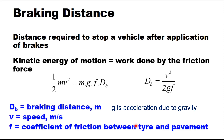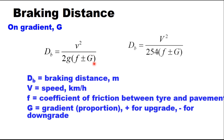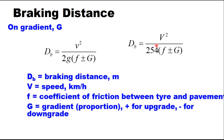If there is a gradient on the road, the equation is modified to db = v²/[2g(f ± G)], where G is the gradient. This converts to db = v²/[254(f ± G)] when v is in kilometers per hour and db remains in meters. G is the gradient expressed as a slope or proportion, positive for upgrade and negative for downgrade.